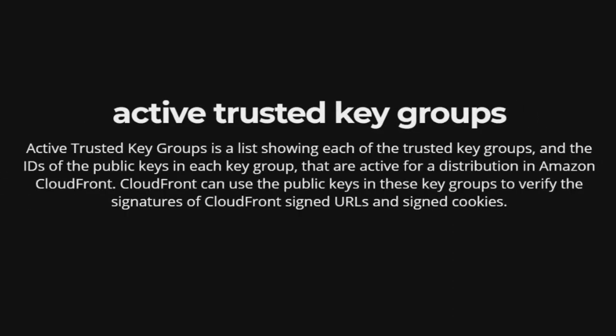Active Trusted Key Groups. Active Trusted Key Groups is a list showing each of the Trusted Key Groups and the IDs of the public keys in each key group that are active for a distribution in Amazon CloudFront. CloudFront can use the public keys in these key groups to verify the signatures of CloudFront signed URLs and signed cookies.